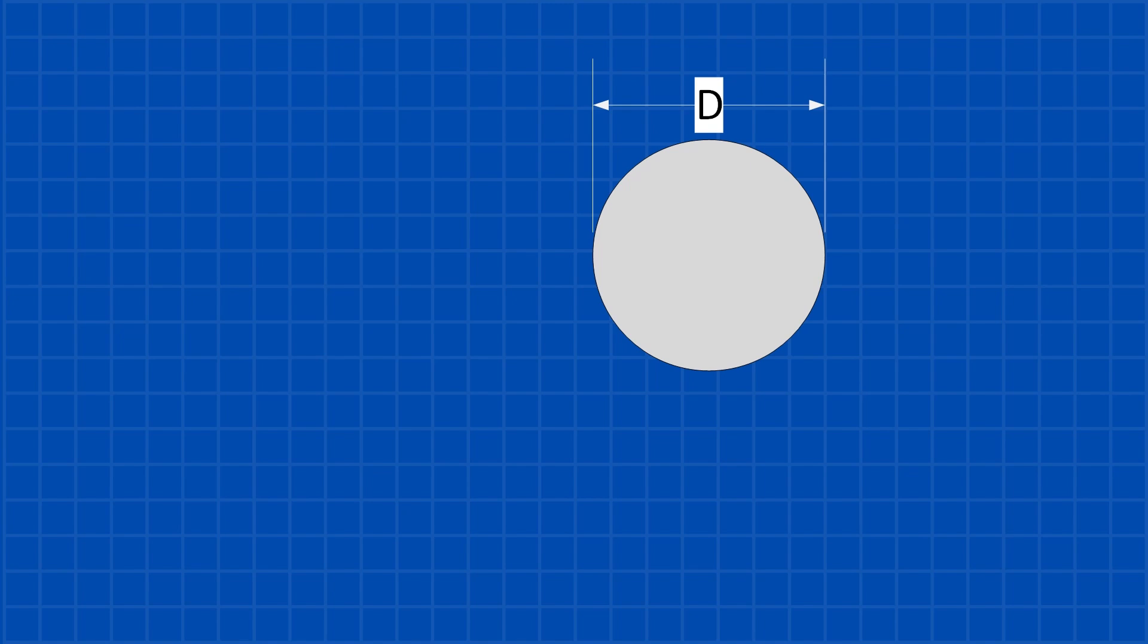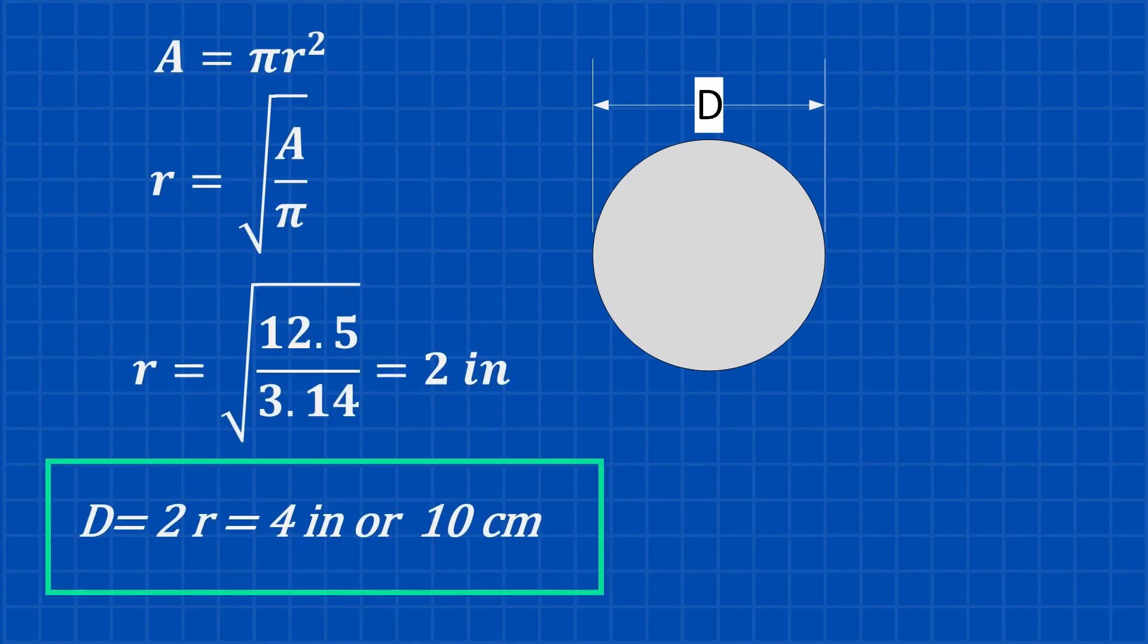Now that we've got the piston area figured out, let's find the diameter. We know that area is pi r squared, so to get the radius, we take the square root of the area divided by pi. That gives us 2 inches. And since the diameter is just twice the radius, that means our piston diameter comes out to 4 inches or 10 centimeters. Simple, right?